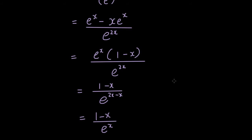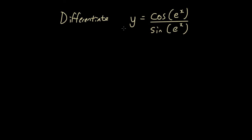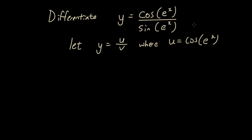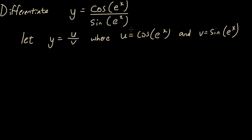I hope this helps you guys do questions that involve the quotient rule. Let's give you guys another one to see if you can get the answer. So the question is: differentiate y equals cosine bracket e to the x, divided by sine bracket e to the x. So again, we're going to let y equals u divided by v, where u is equal to the term at the top and v is equal to the term on the bottom. So now we're going to differentiate each one separately.